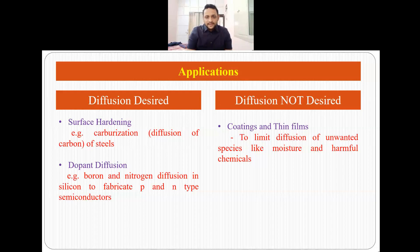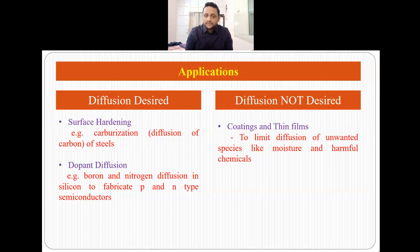A second example of applications where diffusion is desired is dopant diffusion. Suppose we want to make p-type or n-type semiconductors — we want the diffusion of boron and nitrogen atoms inside the silicon lattice. In this scenario, we want the diffusion to occur, and the higher the diffusion, the better we will get the p- and n-type semiconductors.